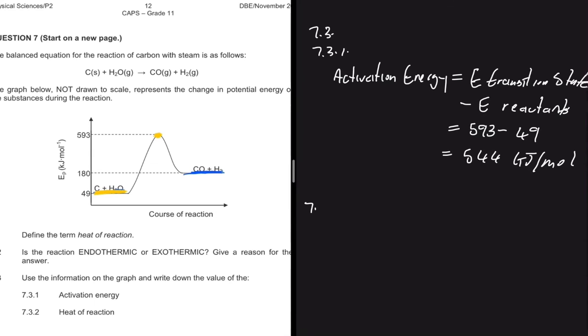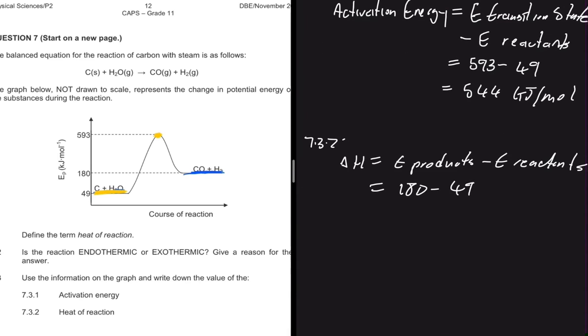And then 7.3.2 heat of reaction. So the heat of a reaction is equal to the energy of the products minus the energy of the reactants. This will be quite easy to compute. So we have 180 minus 49, again, the energy of the reactants. So if we compute that, we get 131 kilojoules per mole.